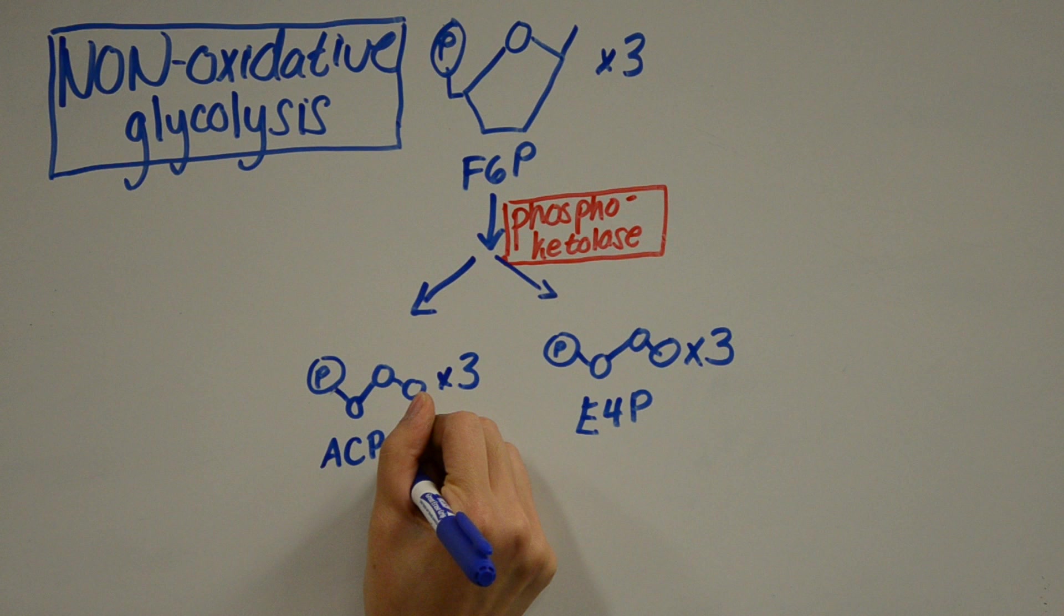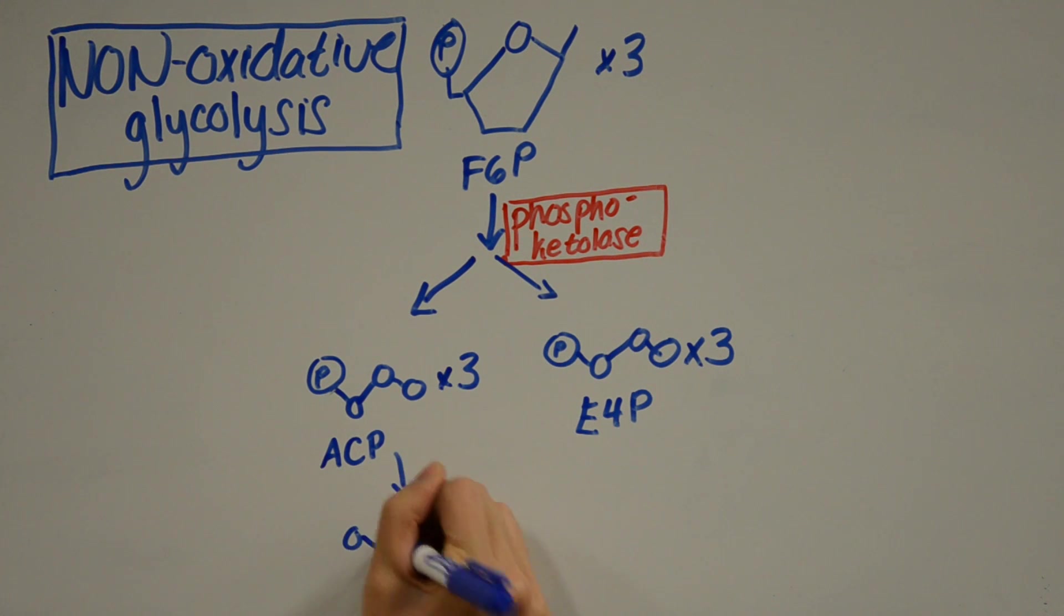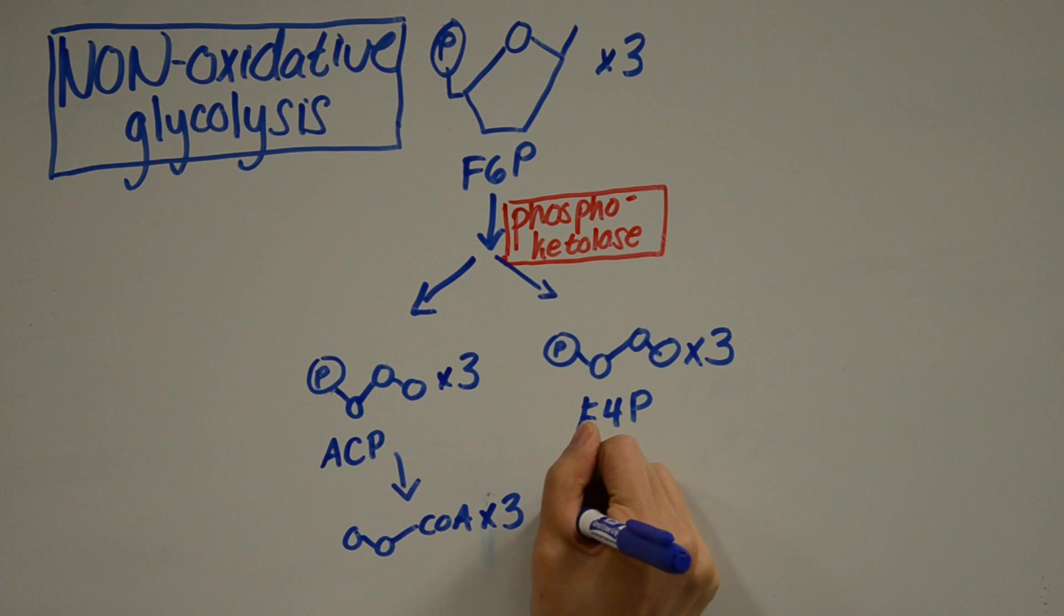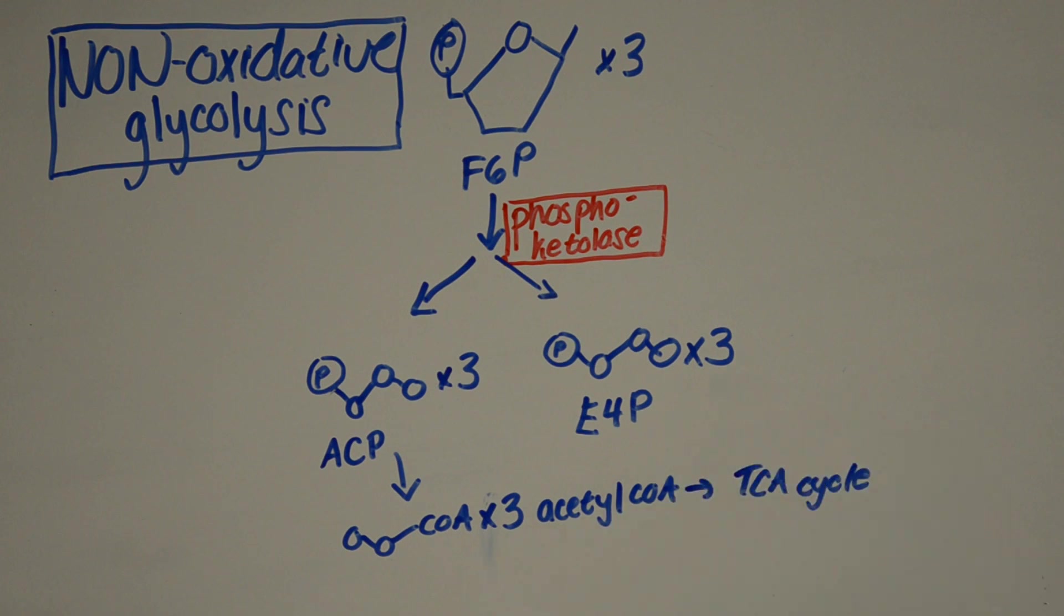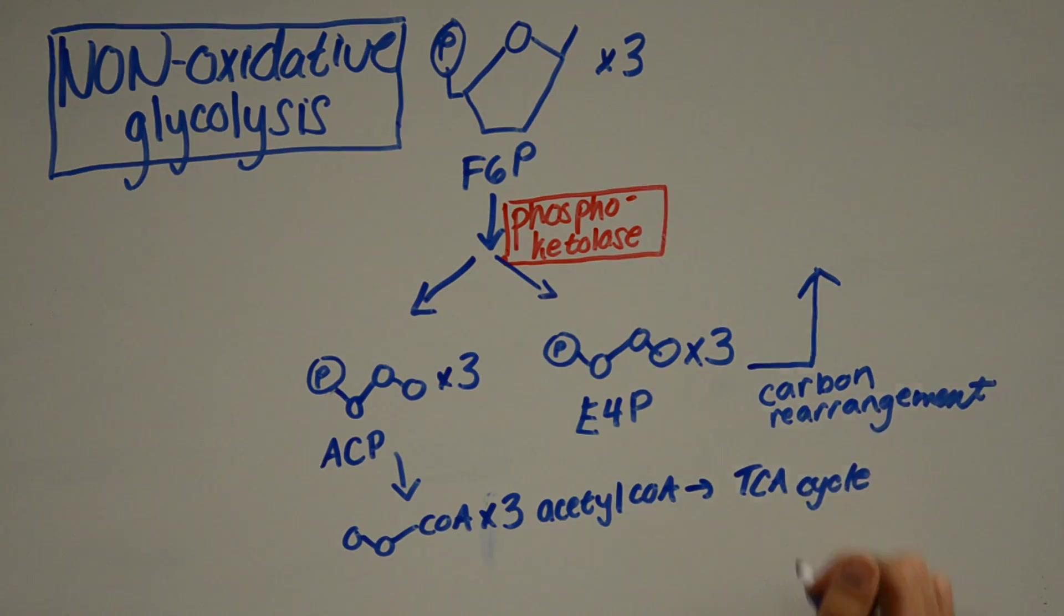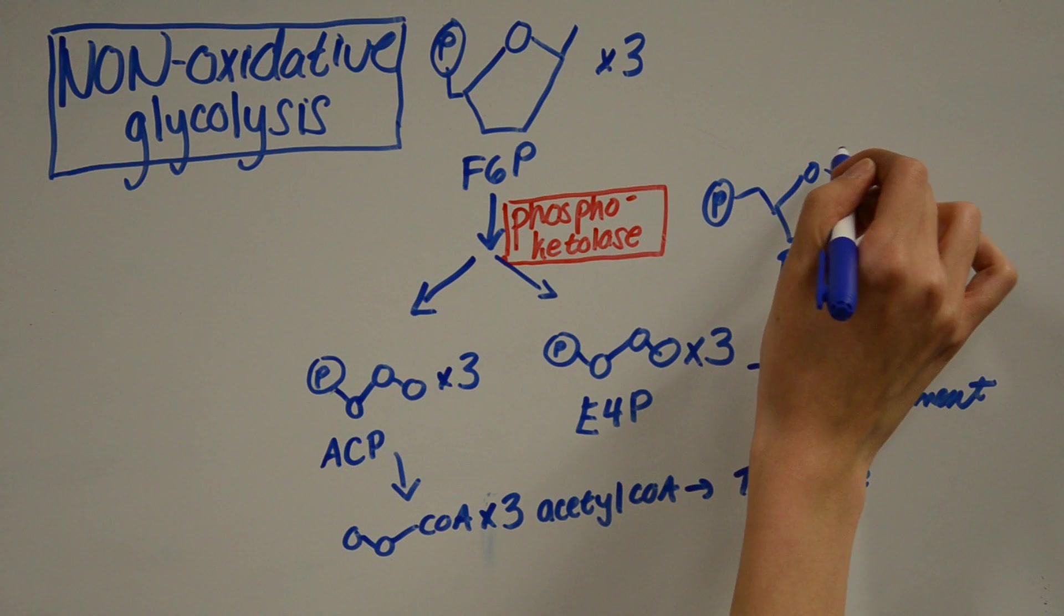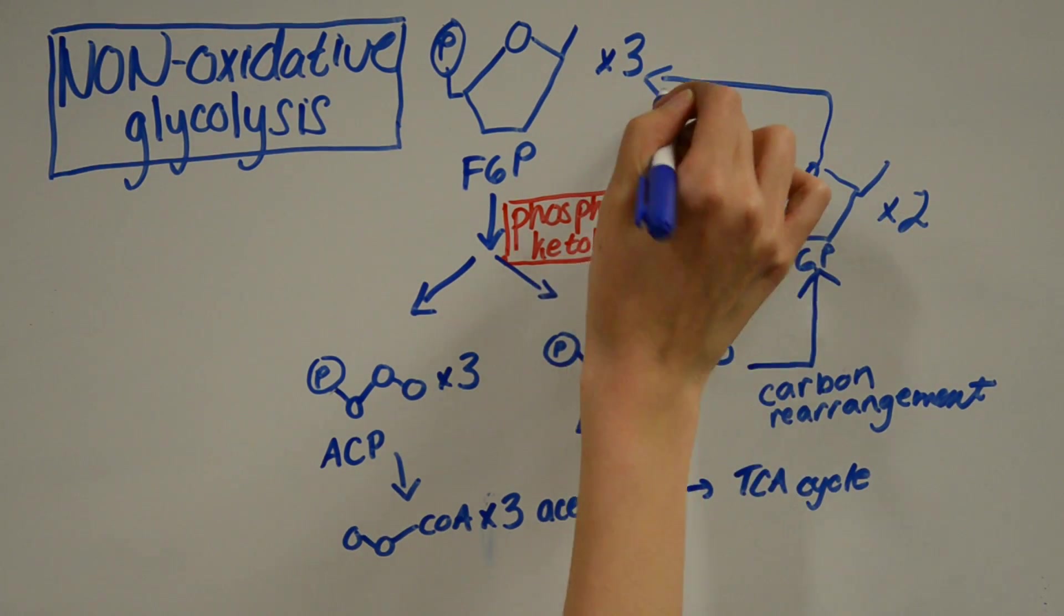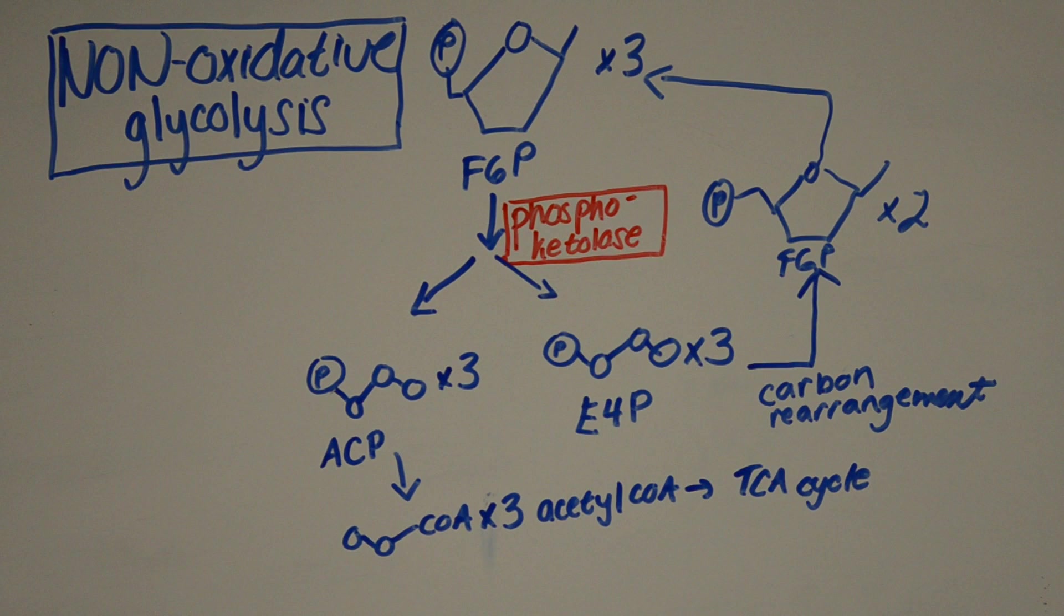At the end, you end up with a net reaction that produces three ACP molecules for every F6P molecule. These ACP molecules then get converted into three acetyl-CoAs, which enter the TCA cycle. The three E4P molecules then undergo carbon rearrangement to make two F6P molecules. These F6P molecules then enter the carbon rearrangement cycle, and then the cycle begins again. Voila, there you have it.